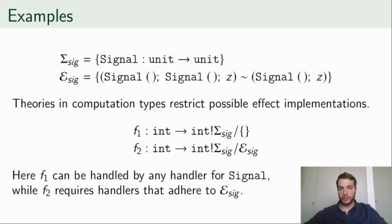This already shows the difference between global and local theories, since in the global setting, we either require all handlers to respect the equation or none of them. In the first case, we can't use such a wide variety of handlers for handling f1, and in the second case, we can't use the equation as a reasoning tool in the body of f2.